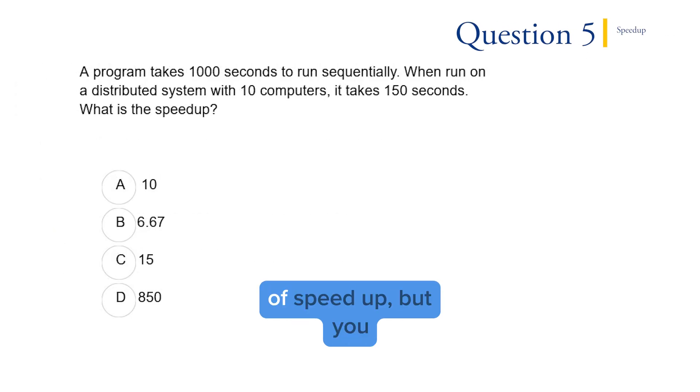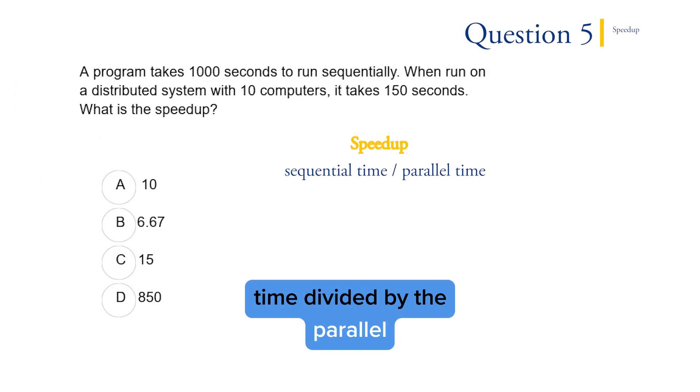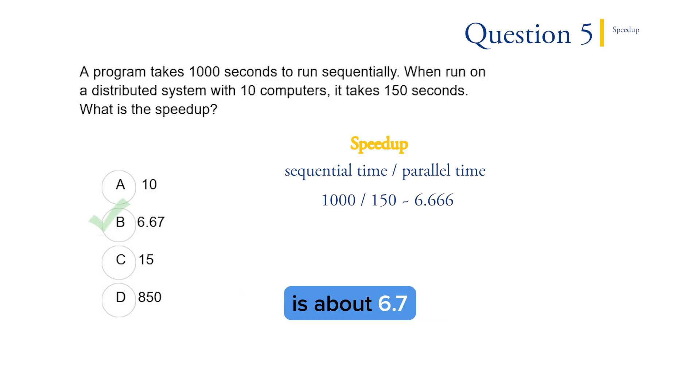Question five. This is purely a definition of speed up, but you might have to know it. Speed up is sequential time divided by the parallel time. That's 1000 seconds divided by 150 seconds, which is about 6.7, or answer B.